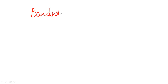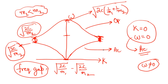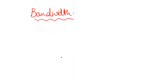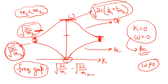What is the bandwidth? For the optical branch and the acoustical branch you will have different bandwidths. For the optical branch, the bandwidth is the maximum value of omega minus the minimum value of omega in that branch. For the acoustical branch, the maximum value is root 2c upon m2 minus 0, and that will be the bandwidth for the acoustical branch. That is how you can find it easily. I hope each and every point is clear — how to find the frequency gap, how to get the bandwidth, and what steps to take.